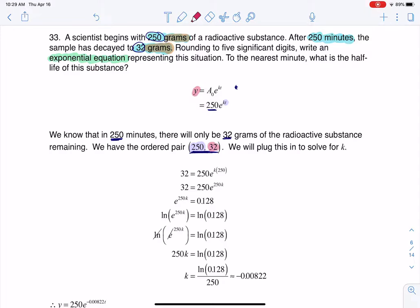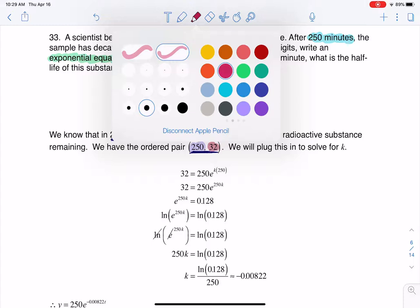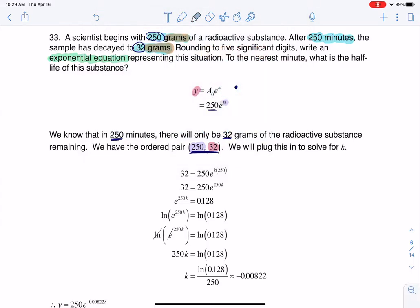So I'm going to plug that ordered pair in and then we're going to solve for k. It's just too hard for me to get the right coloring on this. I'm going to try just for fun. There we go. I'm going to solve for k. So let's go ahead and do that.